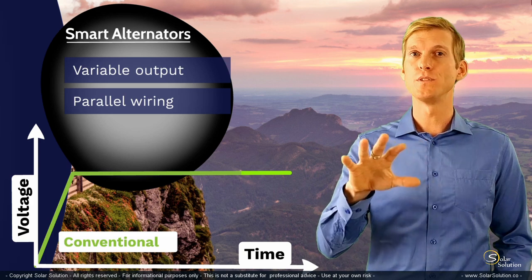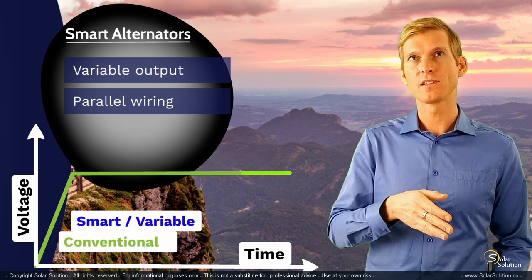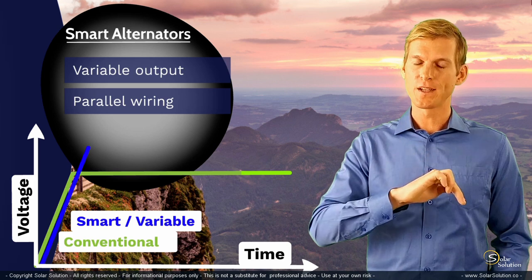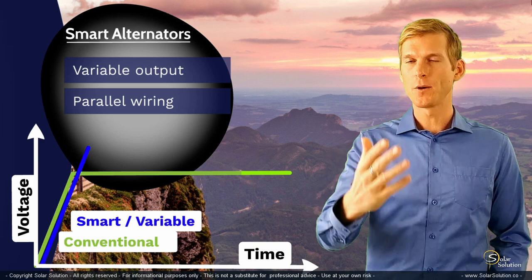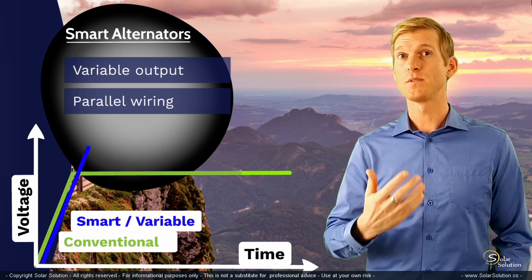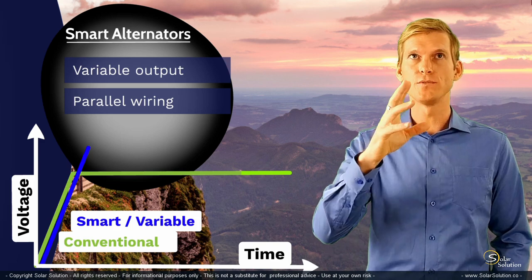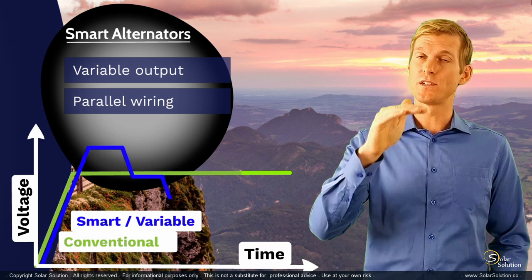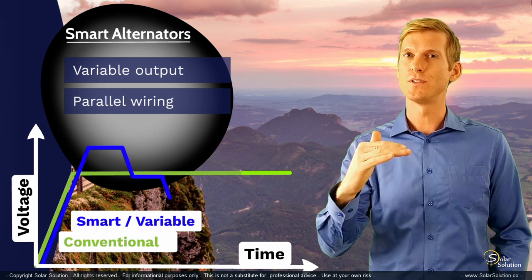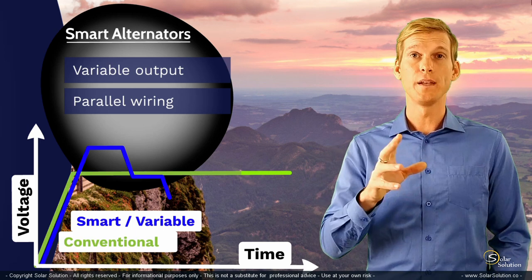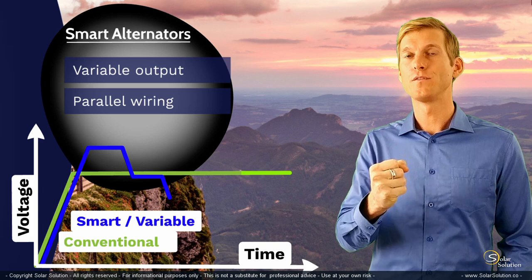If we compare that with a smart or variable output alternator, you'll see that it will initially create a higher output voltage — it pokes through the conventional line and reaches a higher voltage, which helps charge your battery faster and sometimes better. But moving forward in time, the output voltage of the smart alternator will start to fluctuate. It keeps the voltage high initially to fully charge the battery, but then lowers the voltage to a more conventional level to avoid further battery degradation. Depending on the situation, it might even drop the voltage further to avoid pulling power from the engine.